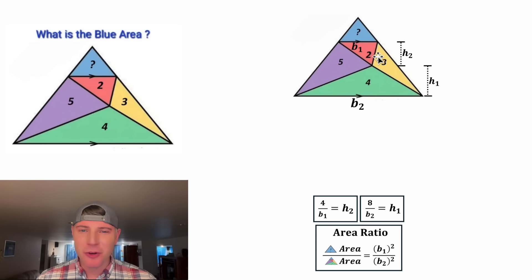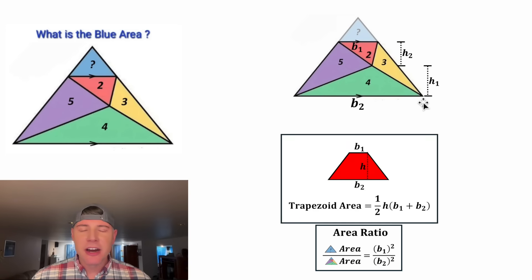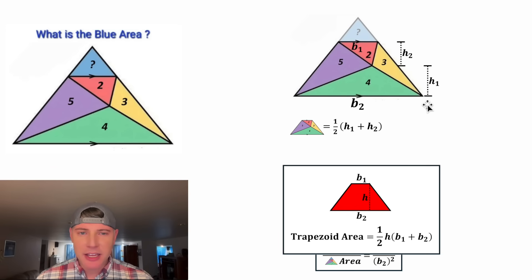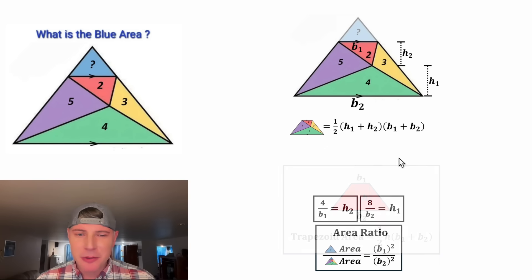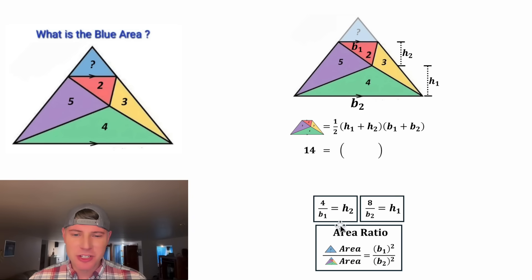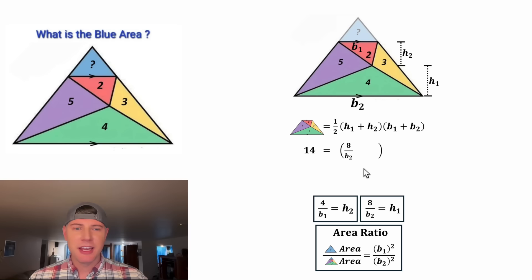Now for this next step, this is going to be fun. We're going to focus on this trapezoid. The formula for the area of a trapezoid is one-half times the height times the sum of the two parallel sides. So for this trapezoid, it'll be equal to one-half times the height, which is H1 plus H2, times the sum of the two parallel sides, B sub 1 plus B sub 2. We know the area of the trapezoid — it's the sum of all the little triangles inside, equal to 14. And then we can substitute our values for H sub 1 and H sub 2: H sub 1 equals 8 over B sub 2, and H sub 2 equals 4 over B sub 1.